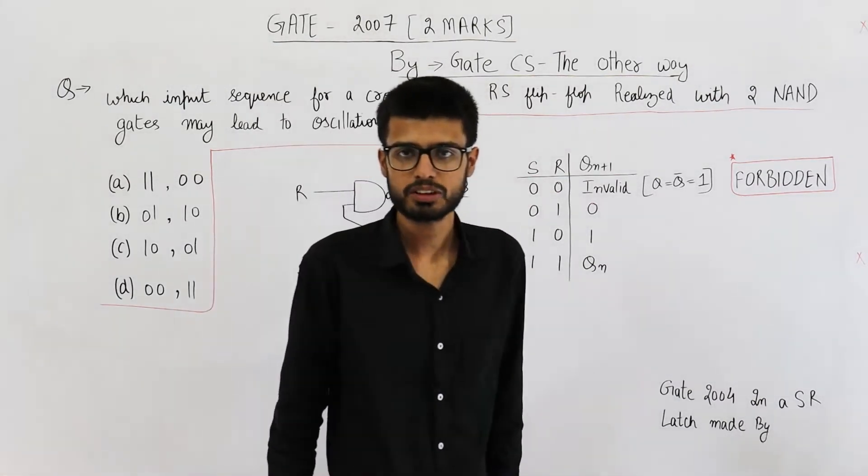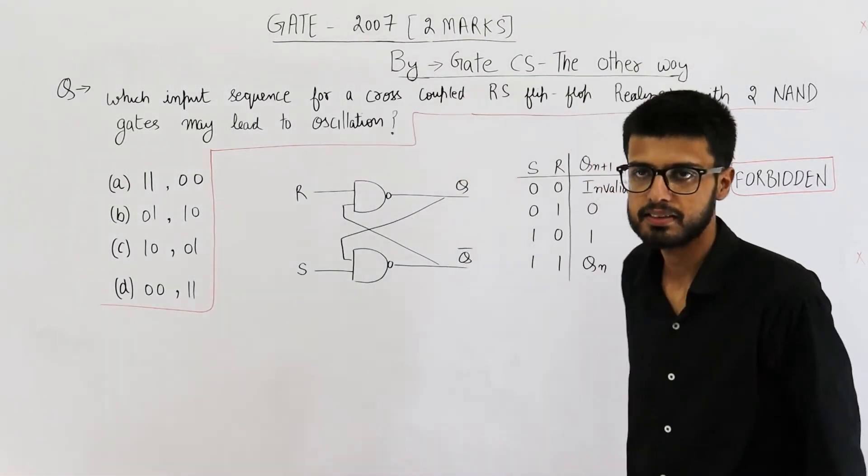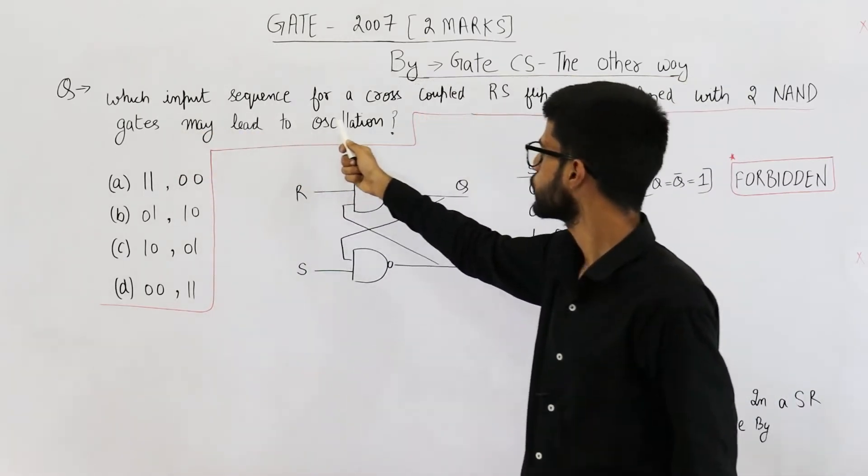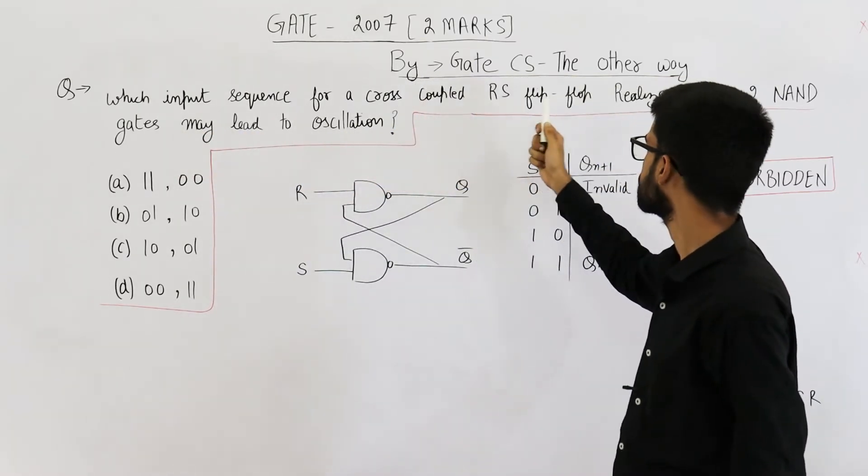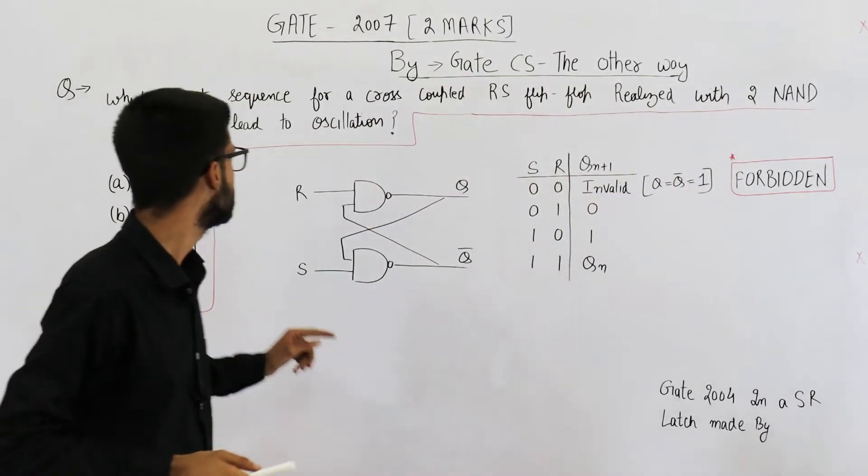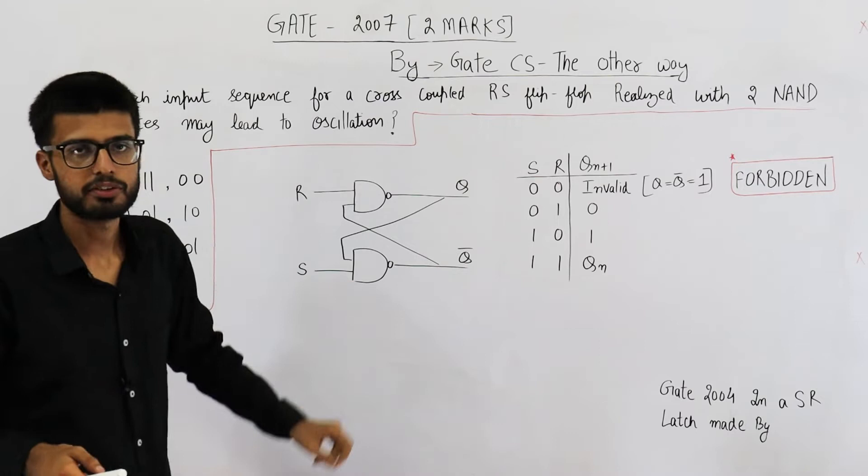Hello people, welcome back. The question is from gate 2007 exam. It's for two marks. The statement is which input sequence for a cross coupled RS flip-flop realized with two NAND gates may lead to oscillation.